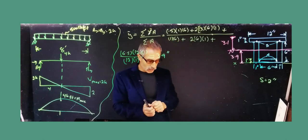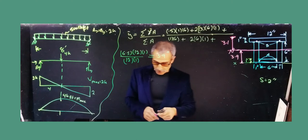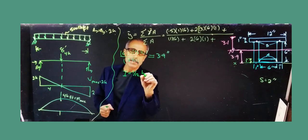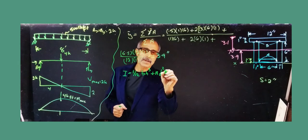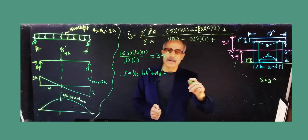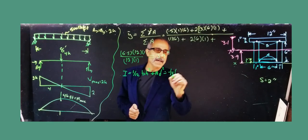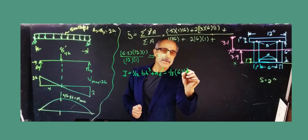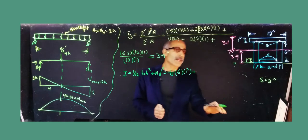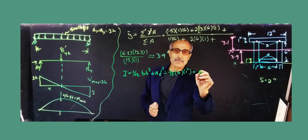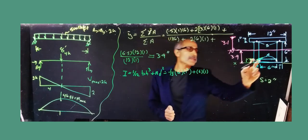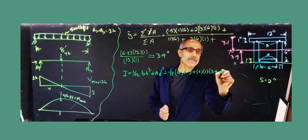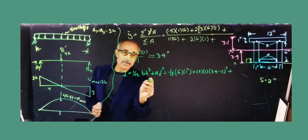Now we calculate the moment of inertia. The formula is I = (1/12)bh³ + Ad² for each shape. Starting with the bottom piece: (1/12)(6)(1³) + (6×1)(3.9 − 0.5)². That's the first shape. For the two side pieces, multiply by 2: 2×[(1/12)(1)(6³) + (1×6)(3.9 − 3)²].